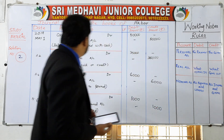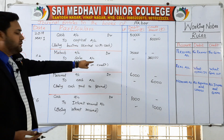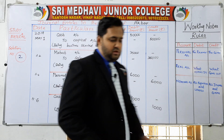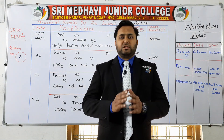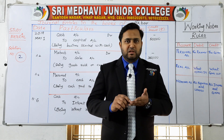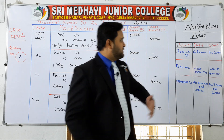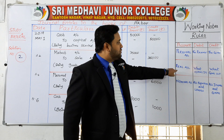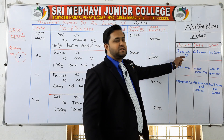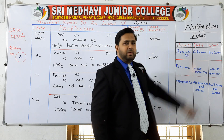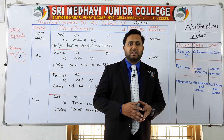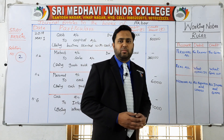This is how you write journal entries: cash account debit to capital account, Mahesh account debit to sales account, Pramodh account debit to cash account, and cash account debit to interest received account. To solve any journal entry problem: first read the question carefully, check which account each transaction belongs to — personal, real, or nominal — and apply the corresponding rule. Hope you understood the problem; we will continue in the next class. Thank you.